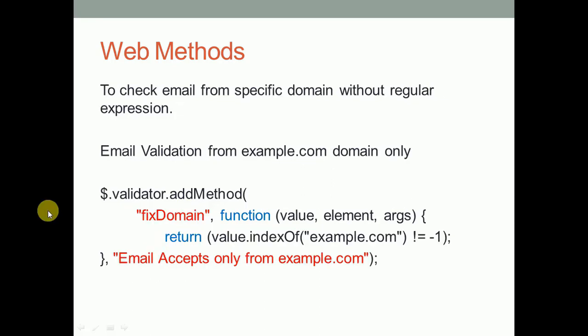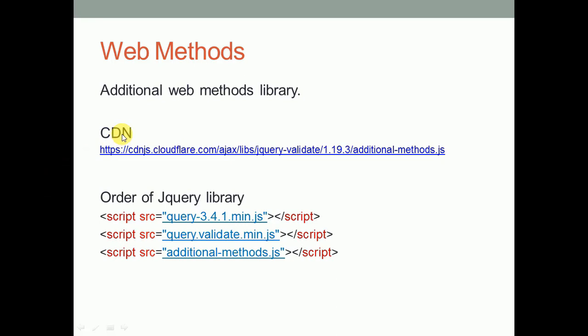Similarly, we will also check an email from a specific domain without regular expression. In this example we will validate an email address from example.com only. And finally we will see a library in which predefined additional methods are available. Let's flip to Visual Studio.